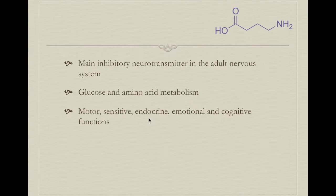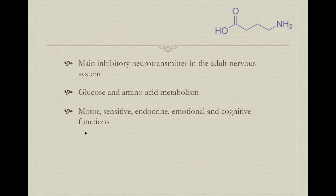Gamma-aminobutyric acid, also known as GABA, is the main inhibitory neurotransmitter in the adult nervous system. It's basically the opposite of glutamate, which is the main excitatory neurotransmitter. It also participates in glucose and amino acid metabolism, and it's part of the glutamate metabolism as we will review further. It participates in almost every activity the brain does: motor control, the sensitive system, endocrine regulation, emotional and cognitive functions, pain processing, etc. So almost everything in the brain is mediated by GABA.